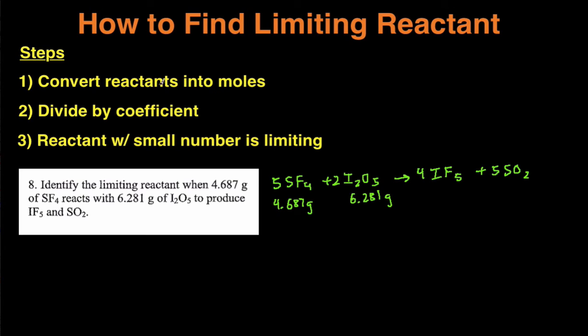So the first step, we're going to convert the reactants into moles by dividing by the molar mass. We're going to divide by the molar mass of SF4, which is 108.07, and then the molar mass of I2O5 is 333.81. Plug that into your calculator and we get the following.